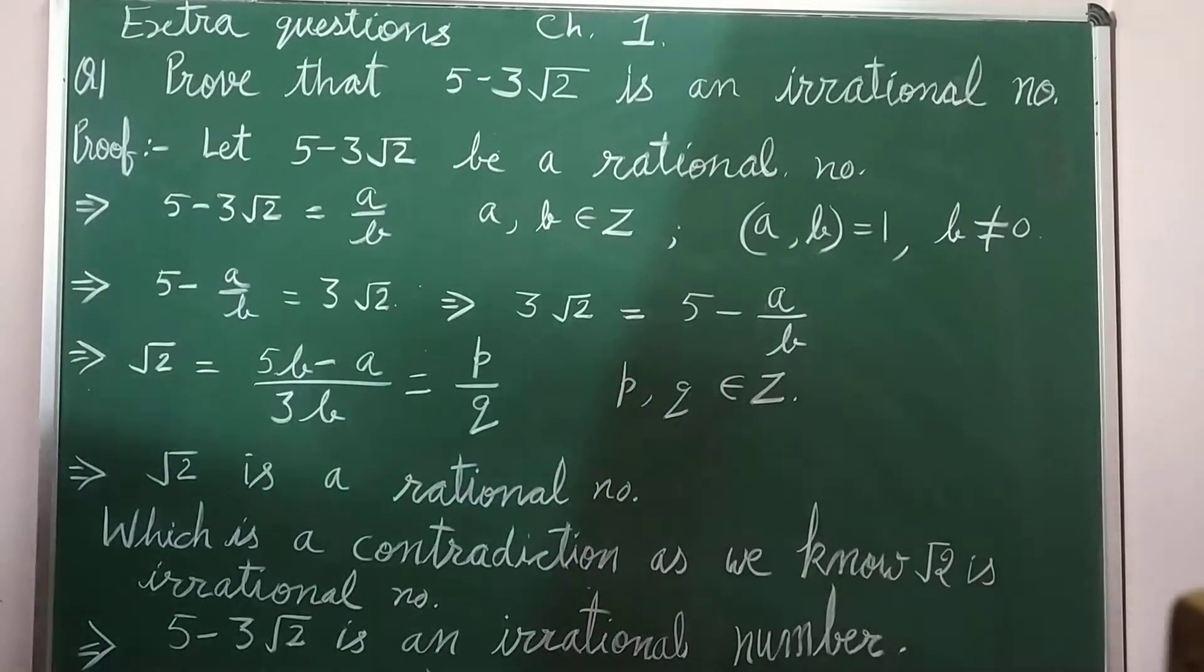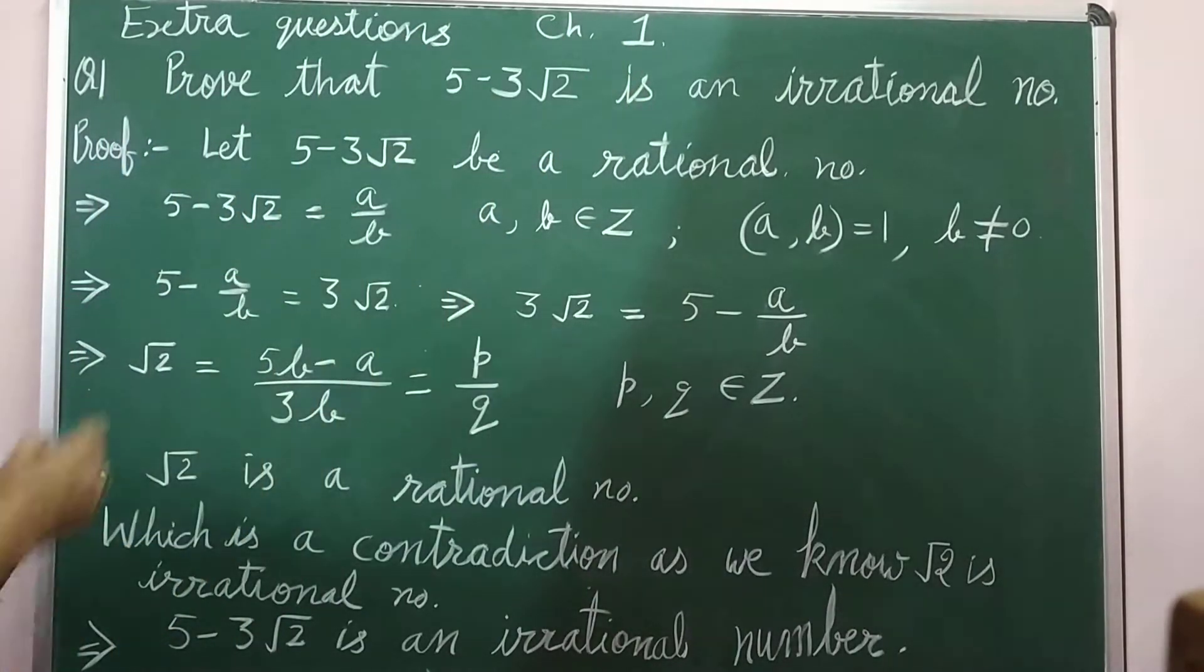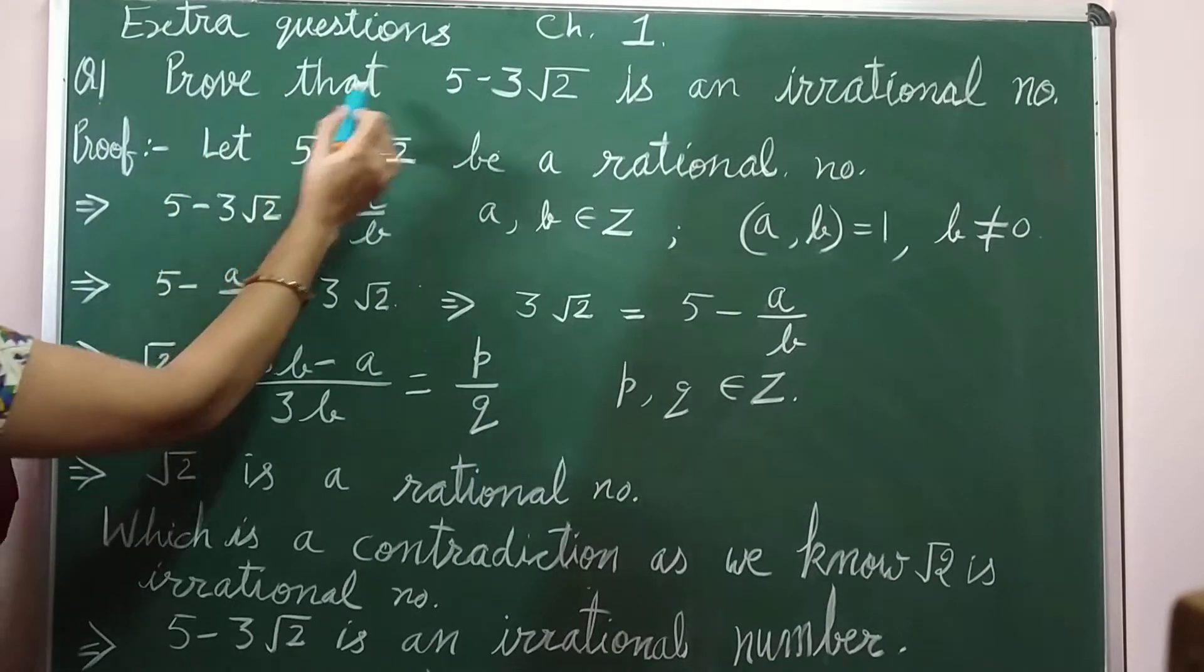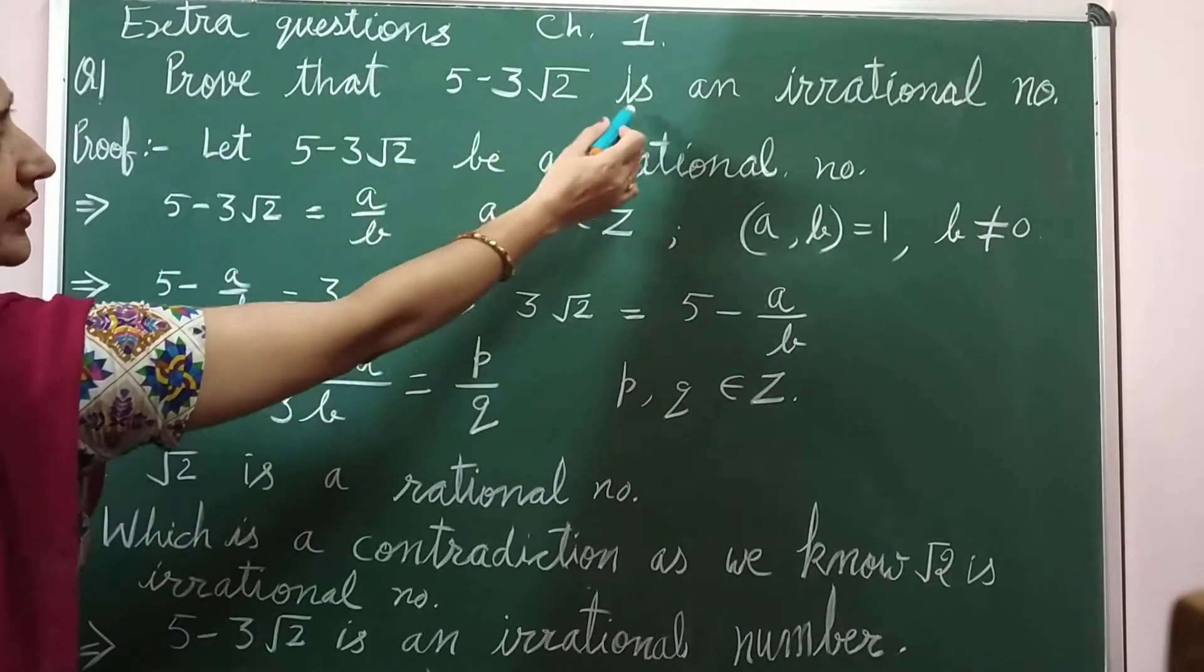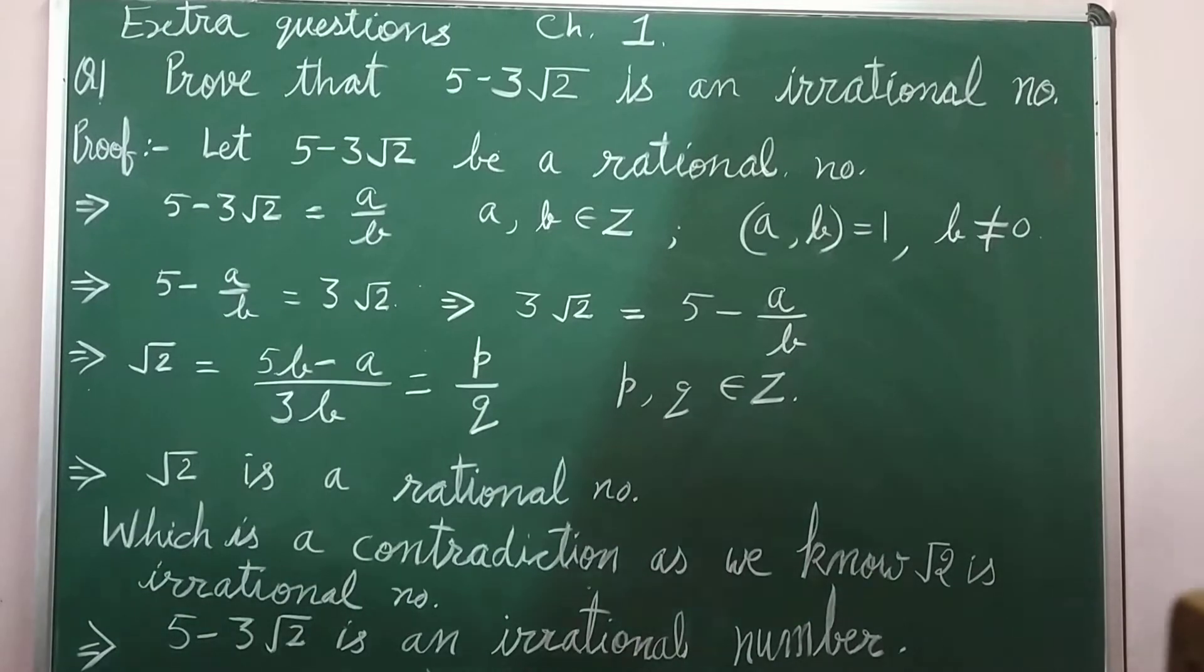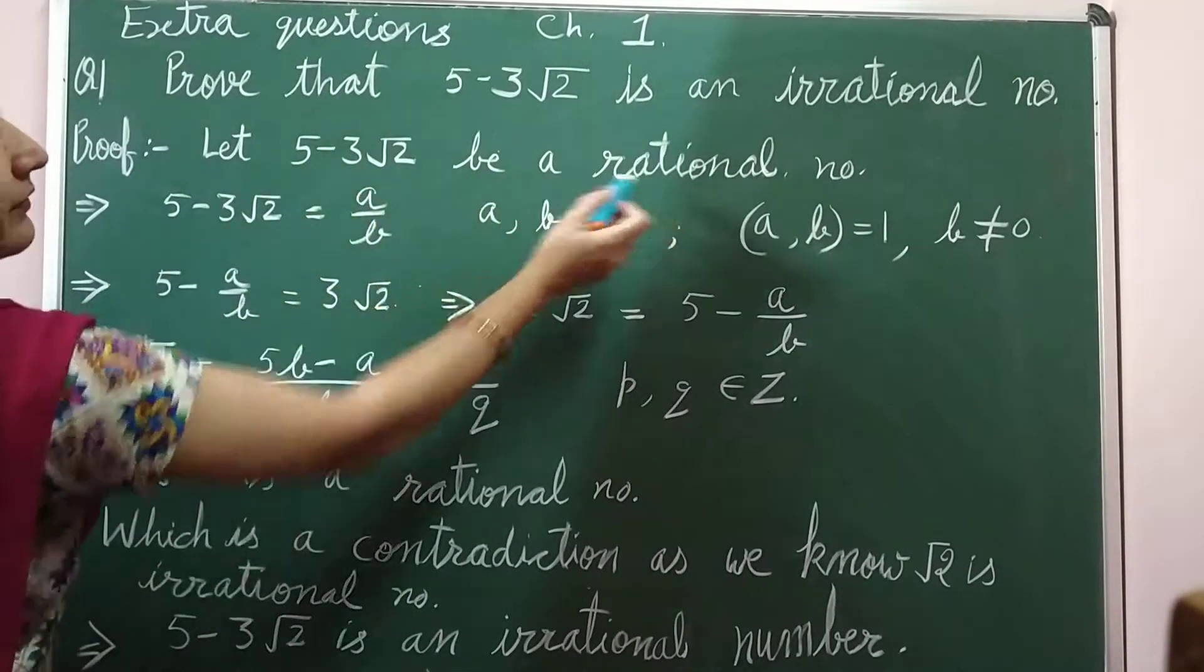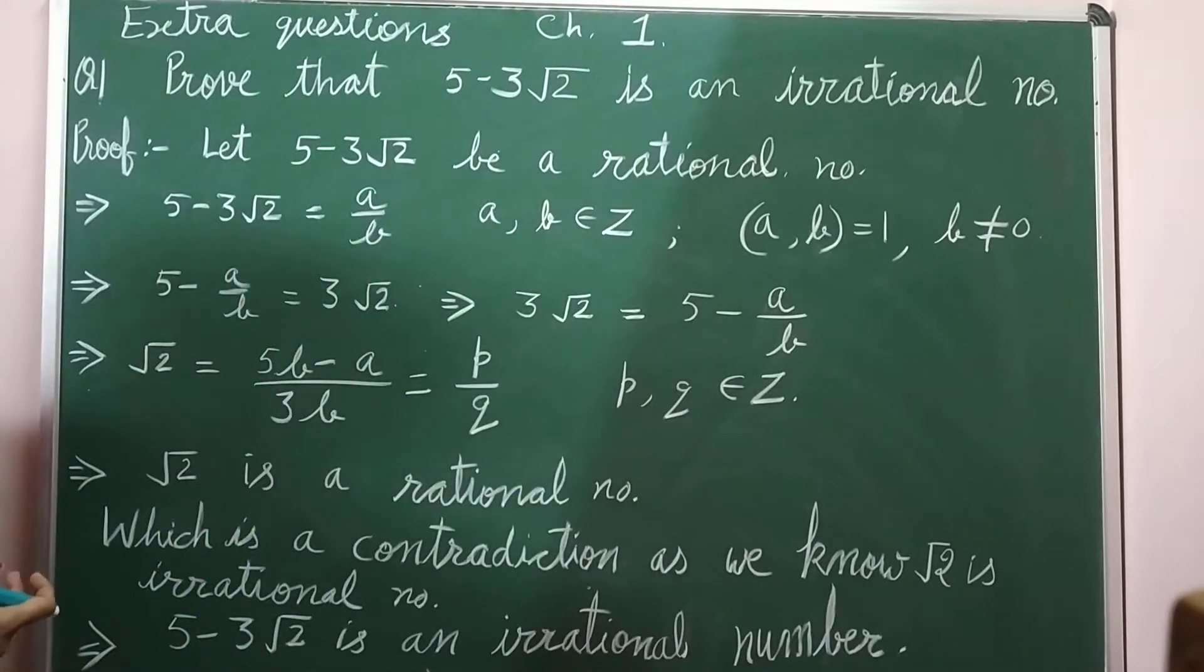Yes, today we are going to do extra questions, Chapter 1, that is real numbers. So here, first question: prove that 5 minus 3 root 2 is an irrational number. You have to show that this is an irrational number. So let 5 minus 3 root 2 be a rational number. We assume on the contrary, let it be a rational number.